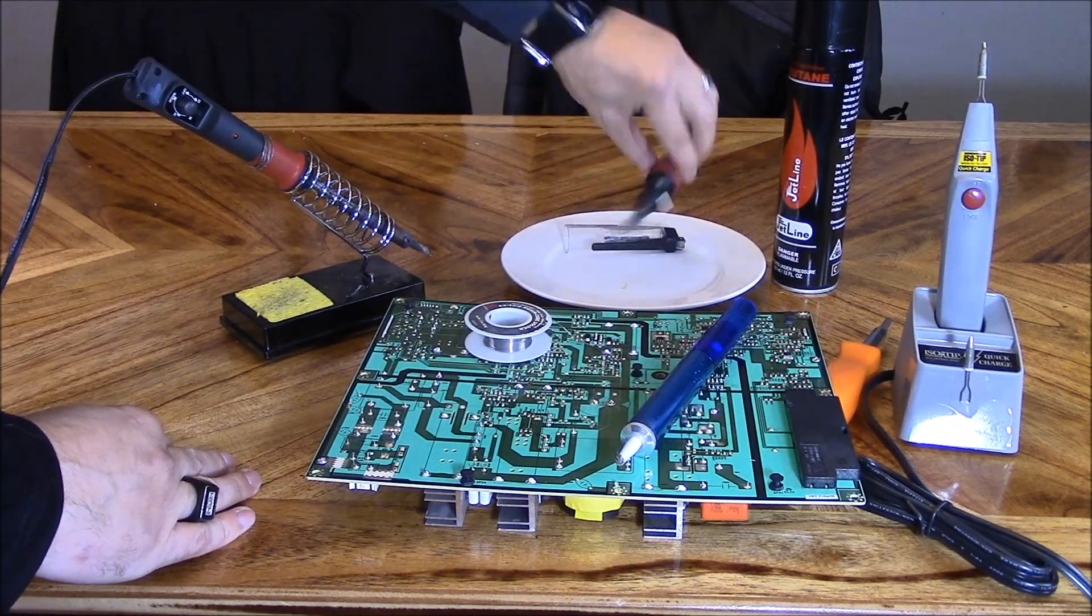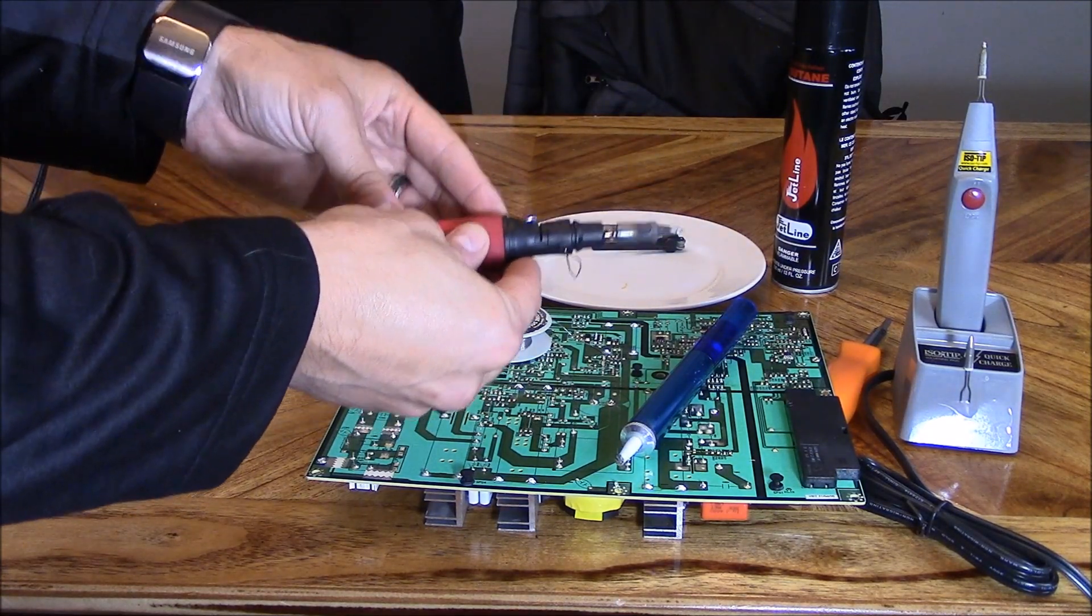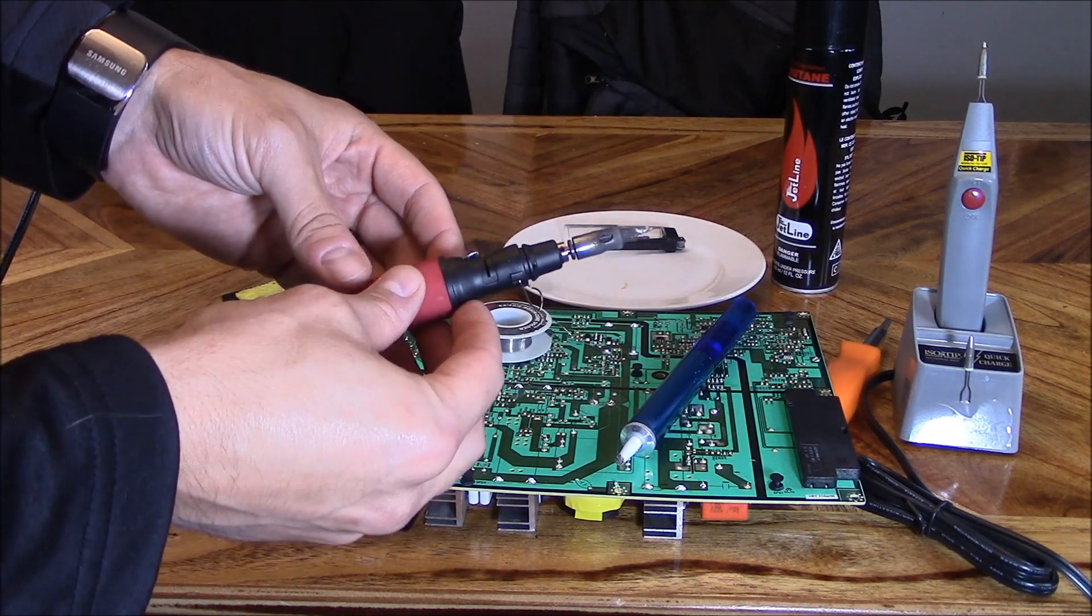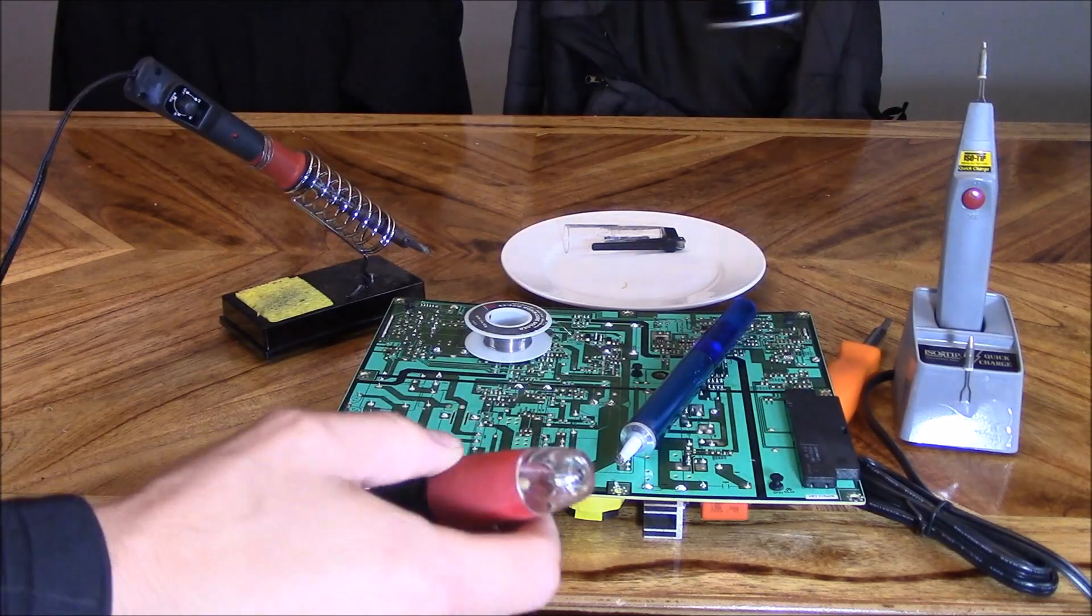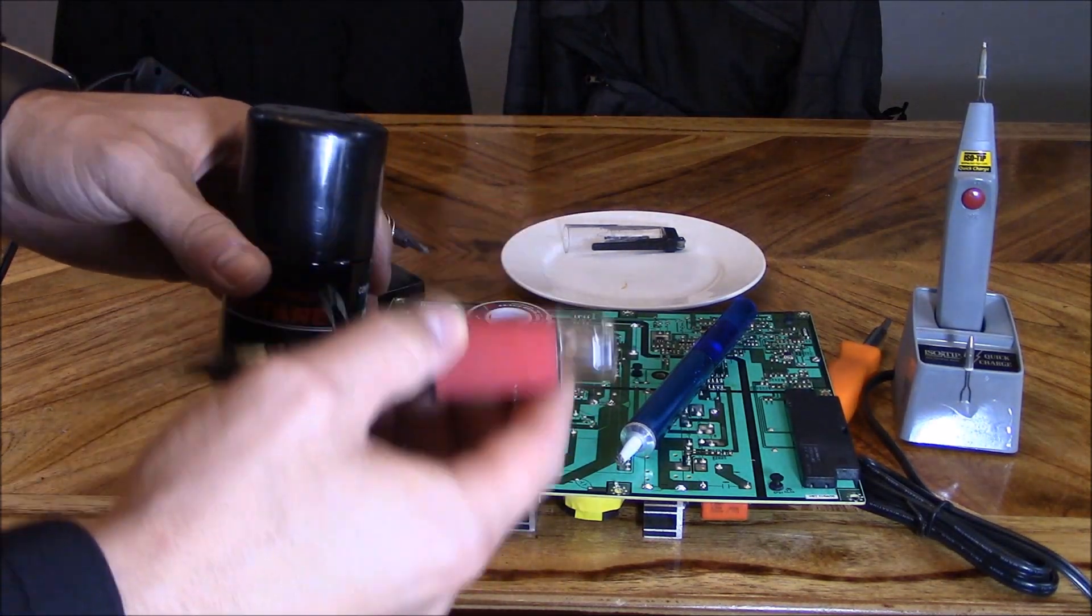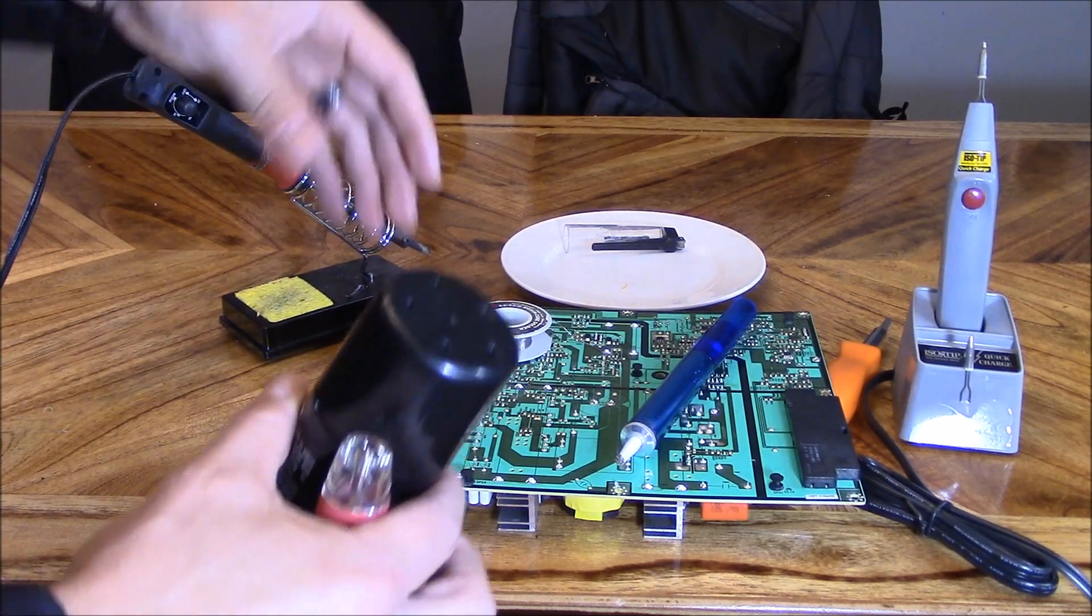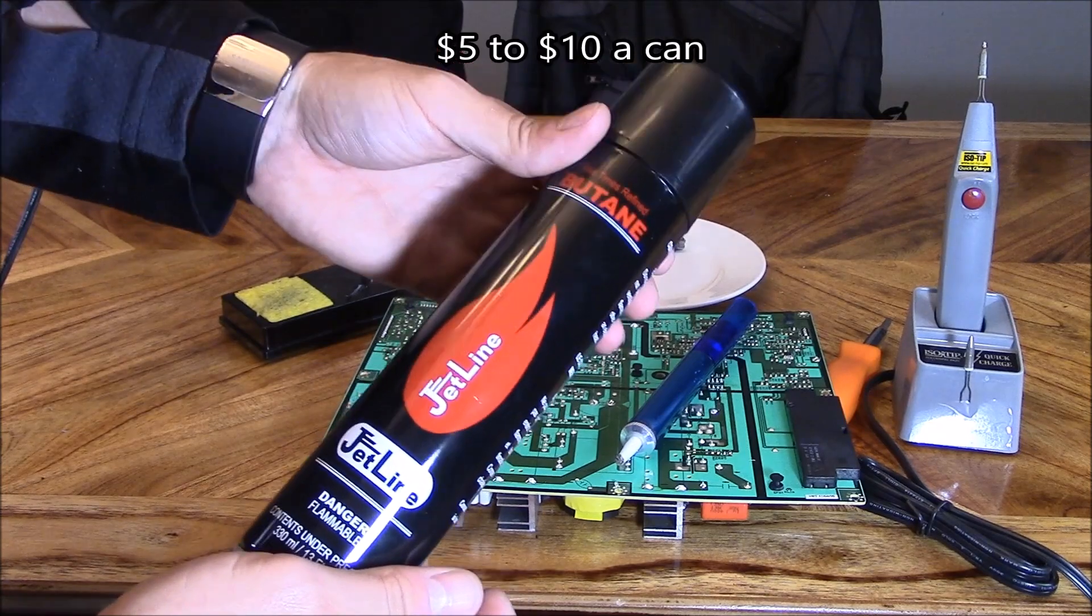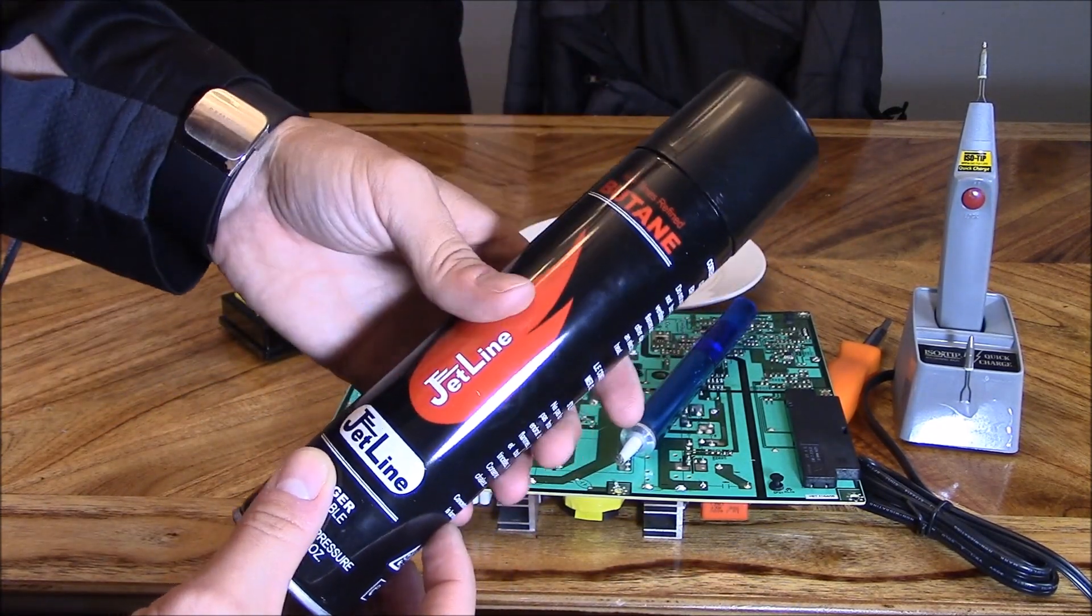Right here, we got a portable butane soldering iron. Isotip makes one. Radio Shack makes a very similar one as well. They both work really well and charge up using butane. This thing costs about $25, the same price as the electrical soldering iron. But you do have to pay $10 for a can of butane every time, and this probably lasts me about six months.